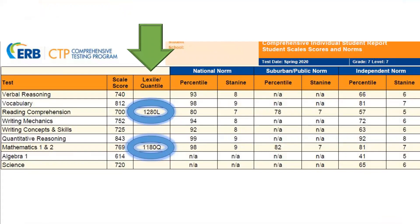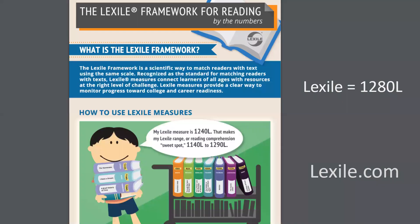Back on page 1 of the Comprehensive Report, you will find your student's Lexile and Quantile scores, produced through the company Metametrics, Inc. These are valuable scores you can use to support your student's learning. Please check out Lexile.com to compare your student's Lexile score to books that match their reading level and content interests, where you will also find helpful resources to support your student's reading journey.